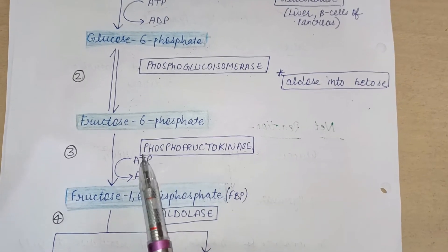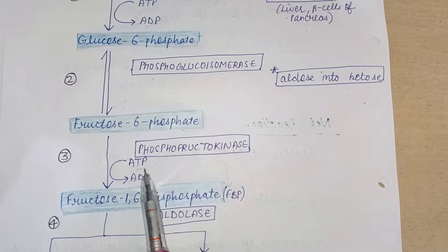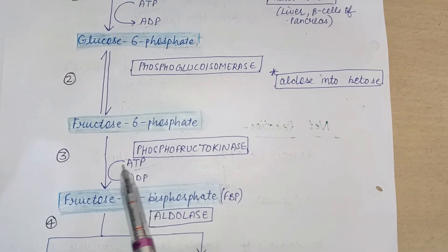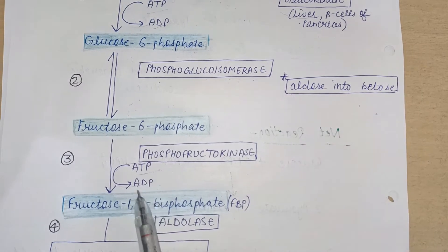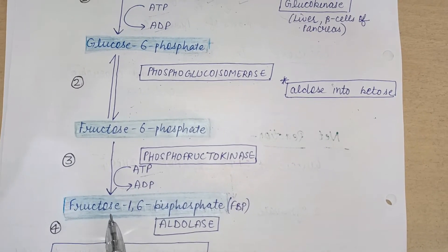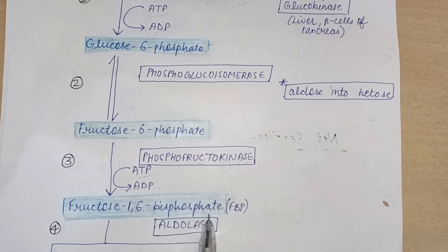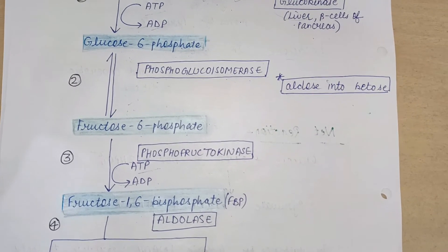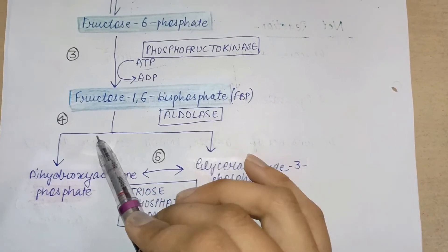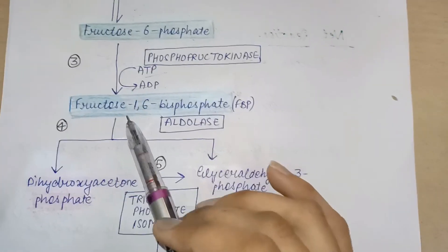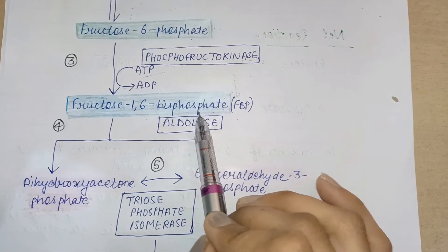After the formation of fructose-6-phosphate, fructose-1,6-bisphosphate is formed with the help of the enzyme phosphofructokinase. During this step, ATP is also converted into ADP as one phosphate from ATP is utilized for the formation of fructose-1,6-bisphosphate.